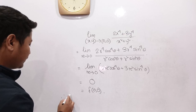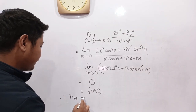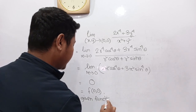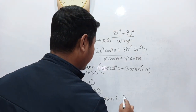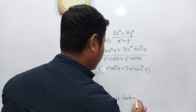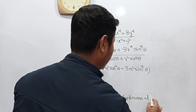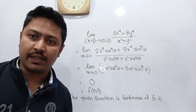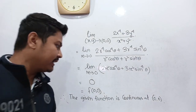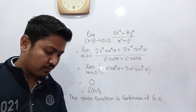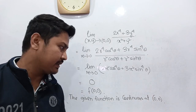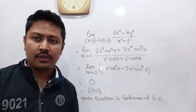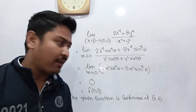So limit as (x,y)→(0,0) of this function equals the functional value at (0,0). Therefore, we can conclude: the given function is continuous at the point (0,0). In this way we can deal with this kind of problem.